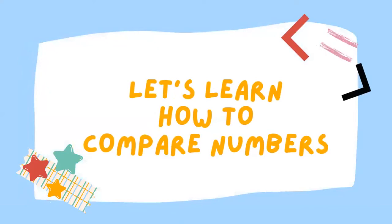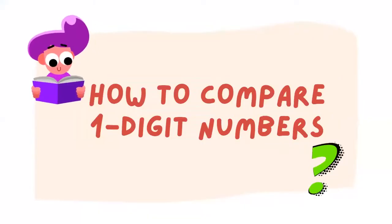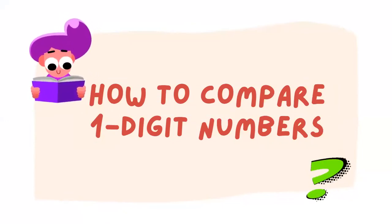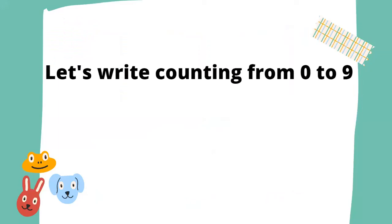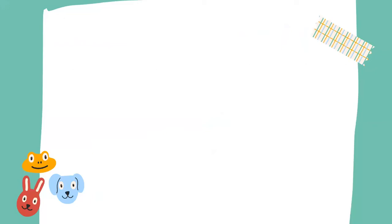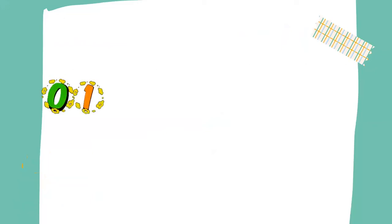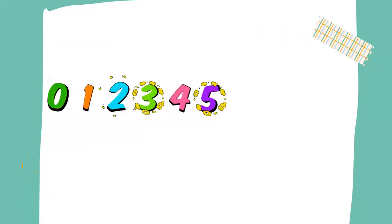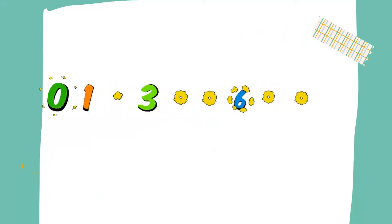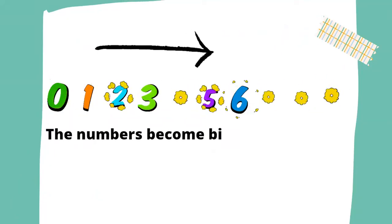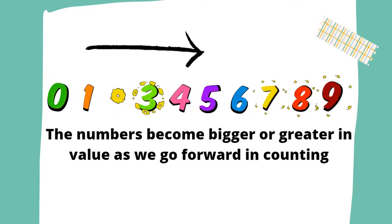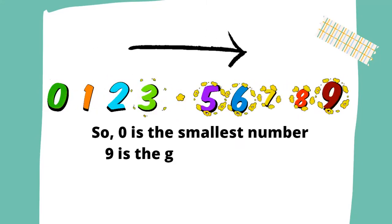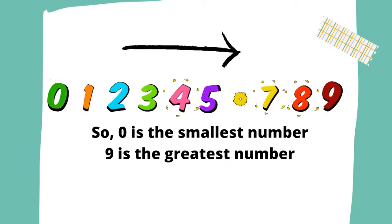Let's learn how to compare numbers. First, let's see how to compare one-digit numbers. Let's write counting from zero to nine — say the counting along with me: zero, one, two, three, four, five, six, seven, eight, nine. The numbers become bigger or greater in value as we go forward in counting. So zero is the smallest number and nine is the greatest number.